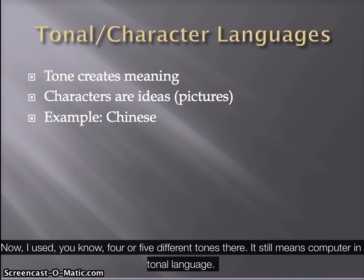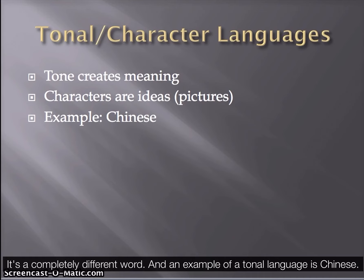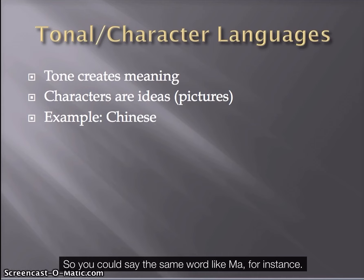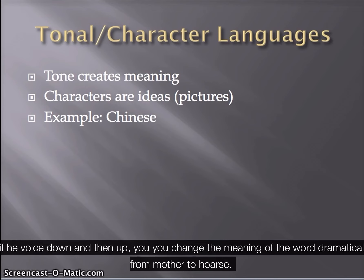In a tonal language, if you change the tone you use, you completely change the meaning of the word — it becomes a completely different word. An example of a tonal language is Chinese. Mandarin has five different tones; Cantonese has even more. So you could say the same word, like 'ma,' and depending on how you say it — if your voice goes up, down, or down and then up — you change the meaning dramatically, from 'mother' to 'horse.'